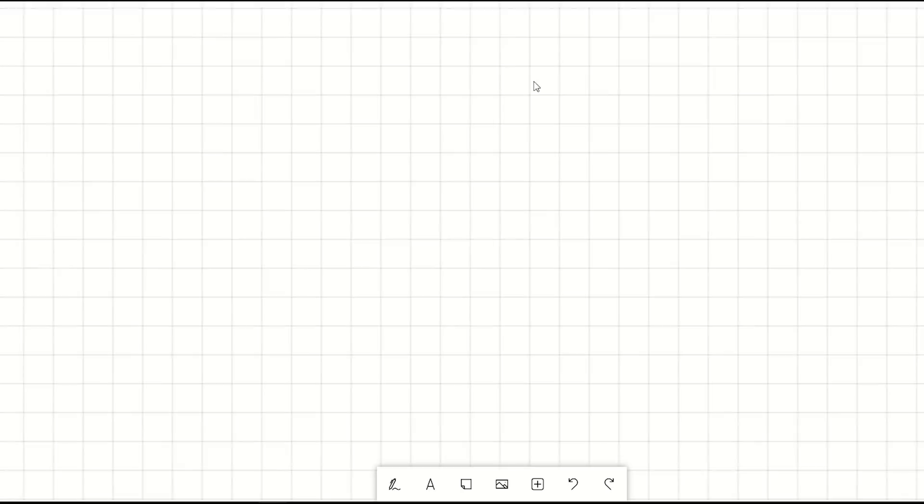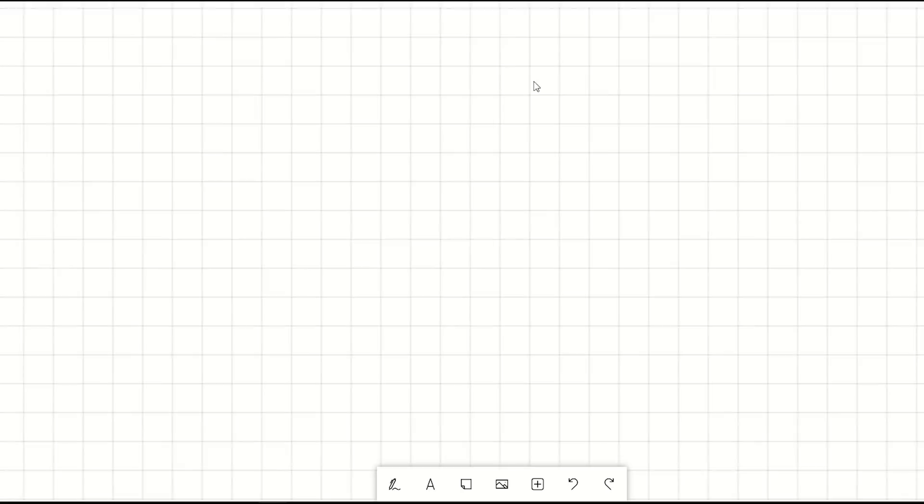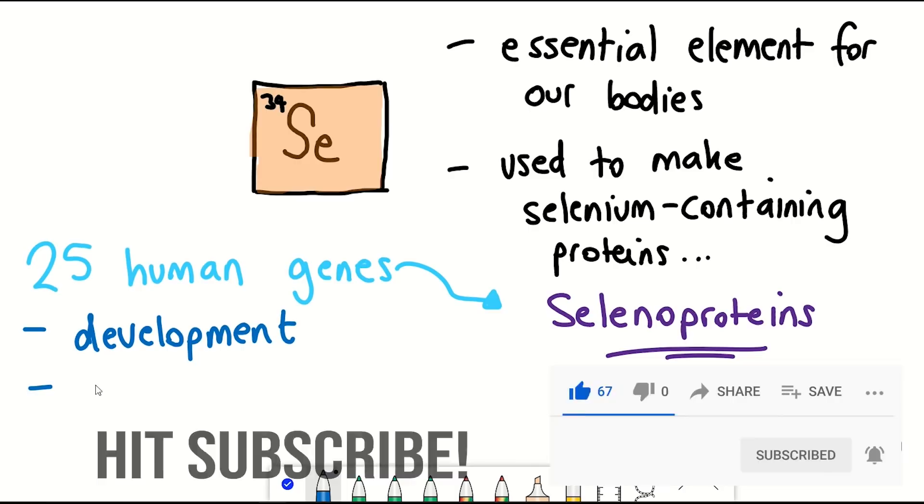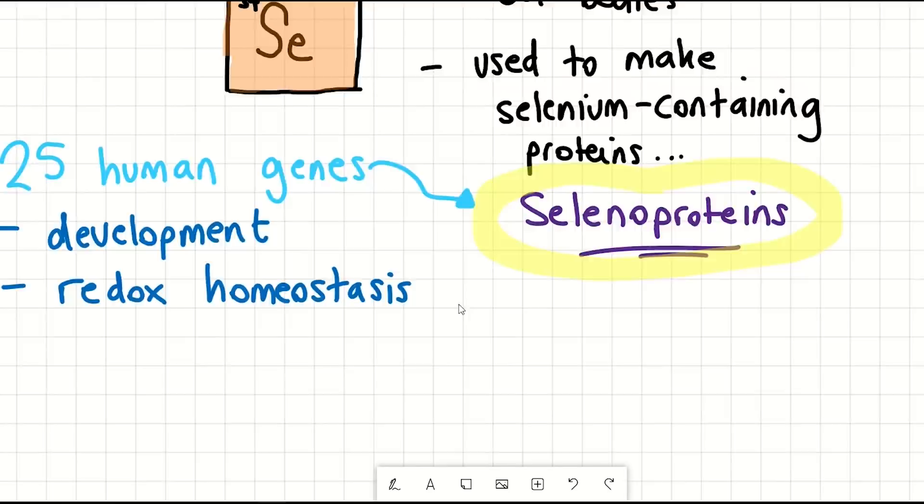So selenium then, the chemical element that is essential for our bodies. This is because selenium is used in selenium-containing proteins, of which we have 25 genes for in humans. These genes are important for development and also include proteins involved in redox homeostasis, so controlling oxidation and reduction reactions. So how can a protein contain selenium?